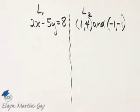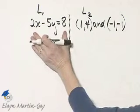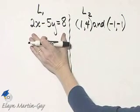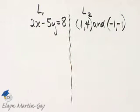To see, let's find the slope of each. To find the slope of this line, since we have its equation, let's solve for y. Once we solve for y, the coefficient of x is the slope.